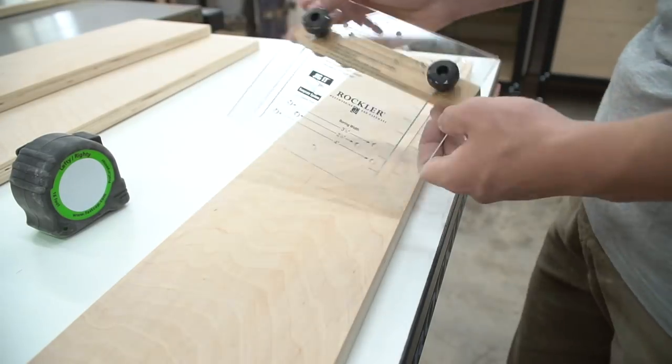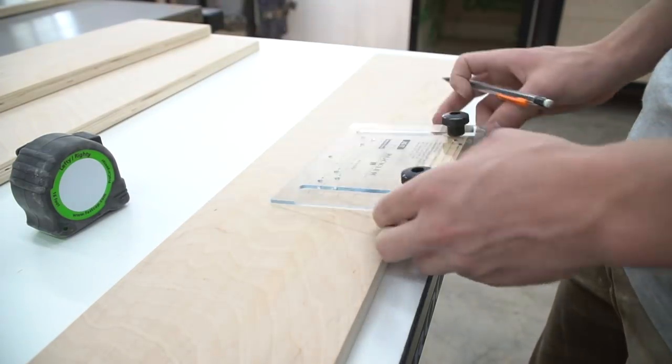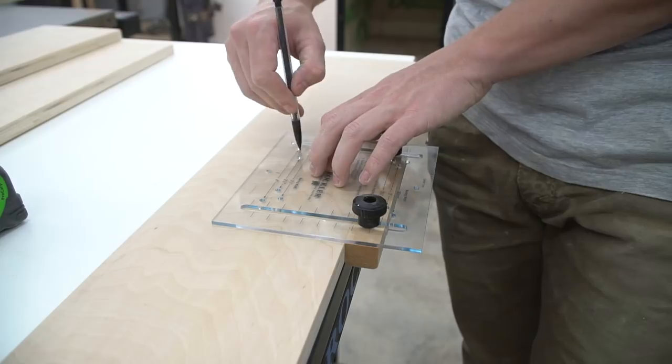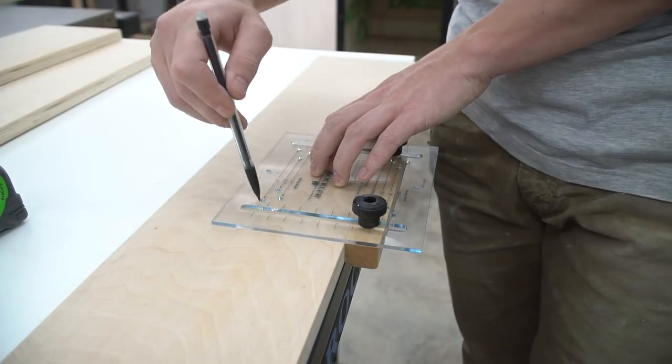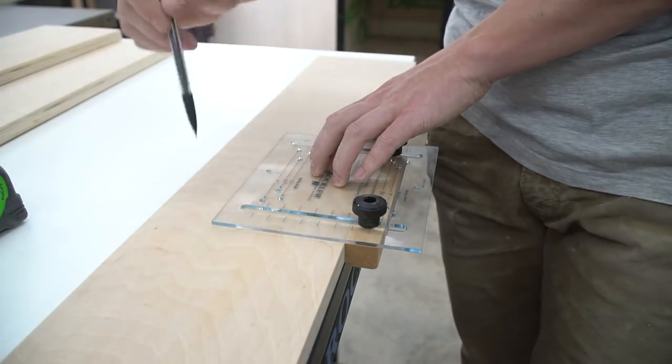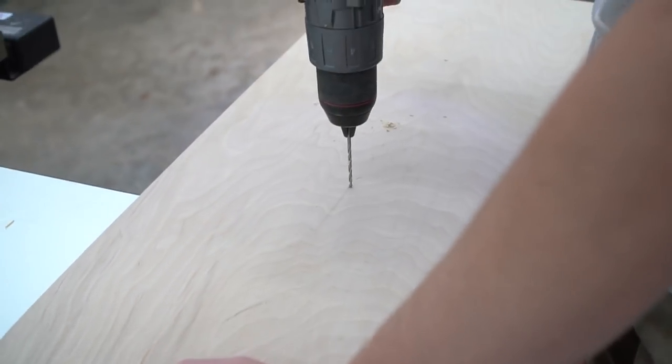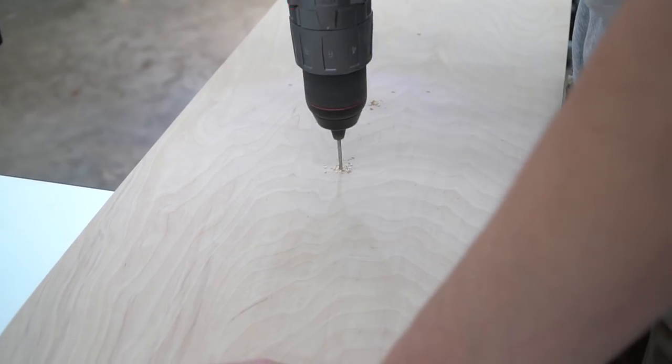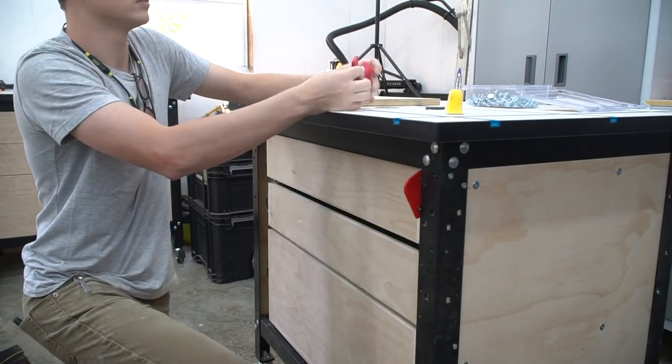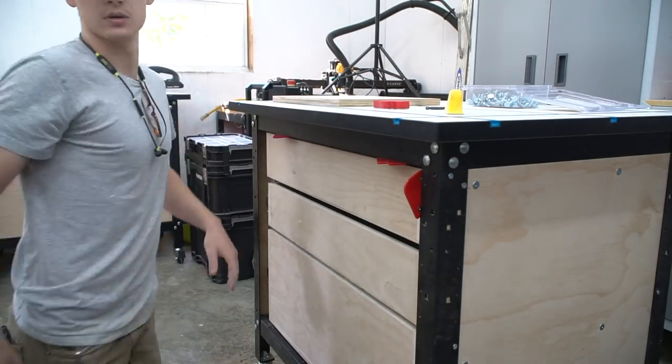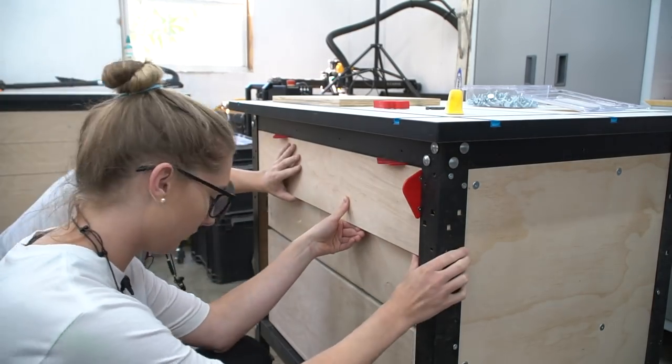We used a jig from Rockler to drill 4 inch on center drawer pull holes. This jig makes keeping the holes consistent so much easier. Use spacers to help align the drawer front and then pre-drill holes through the drawer pulls and into the drawer box.